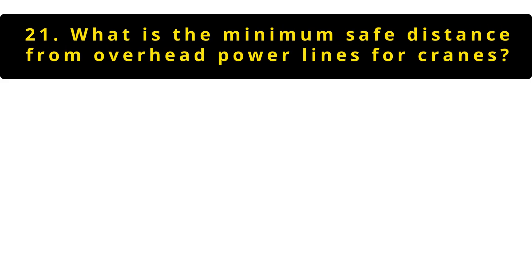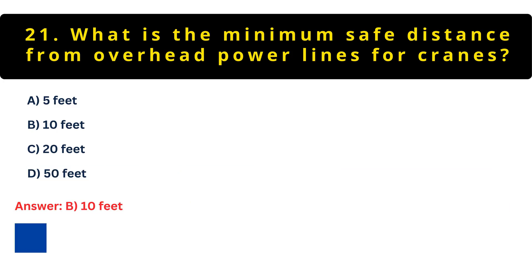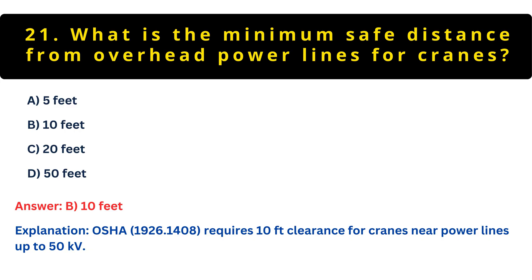Question 21: What's the minimum safe distance from power lines for cranes? Option A: 5 feet. Option B: 10 feet. Option C: 20 feet. Option D: 50 feet. B is correct — 10 feet for lines up to 50 kV. This OSHA requirement prevents deadly electrocutions, one of construction's fatal four hazards. Always know your clearance distances.